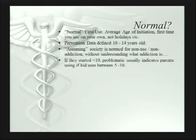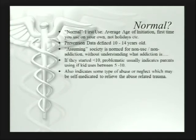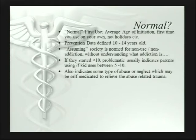People have an inherent, almost genetic sense of right and wrong — no matter what the parents are doing, the kid has a sense: this is right, this is wrong. 'I love mom and daddy, but something is not right with them.' If they start before age 10, this also indicates some types of abuse or neglect, which may later be self-medicated to relieve the abuse-related trauma. They're not going to tell you this, but you can pretty much infer it from what they're telling you.